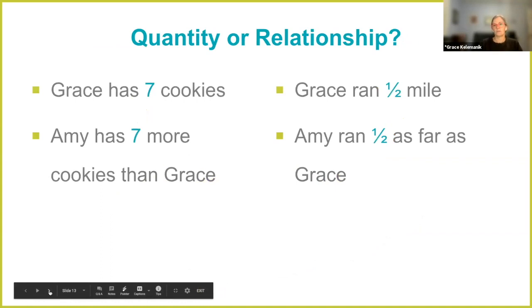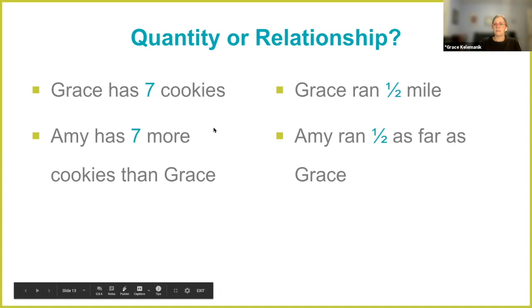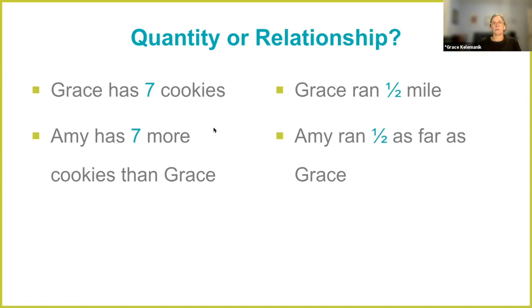Let's take a look at those two numbers in four different situations. Take about a half a minute and ask yourself in each case: is that number telling you something about a quantity, or is that number describing a relationship? So that first one — Grace has seven cookies — I've seen a bunch of quantities come in.